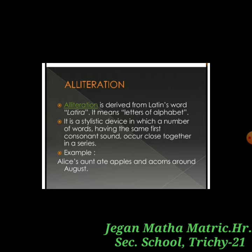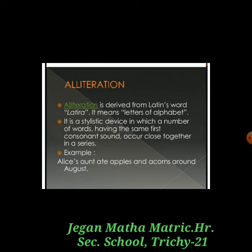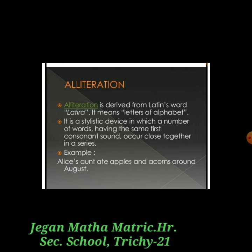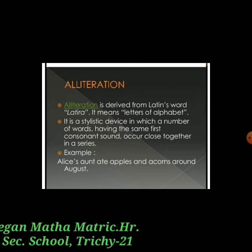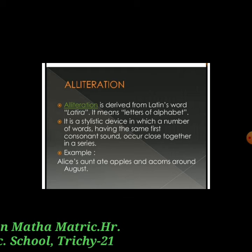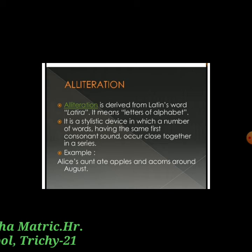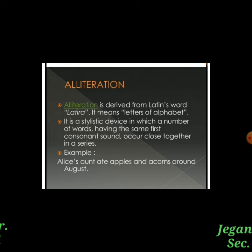Next is alliteration. Alliteration is the repetition of the initial consonant sound in a single poetic line. It is derived from the Latin word 'alletera,' meaning letters of the alphabet. It is a stylistic device in which a number of words having the same first consonant sound occur close together in a series. For example: 'Alice ate apples and acorns around August' — all starting with the letter 'A.'